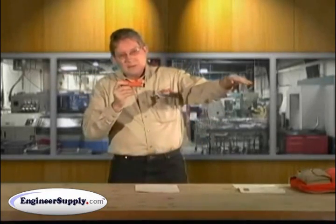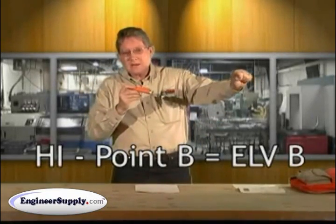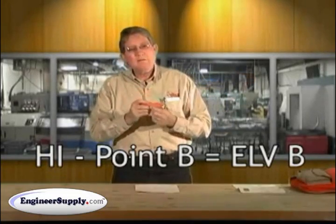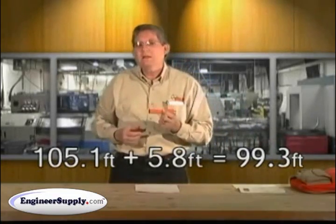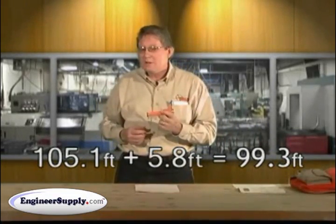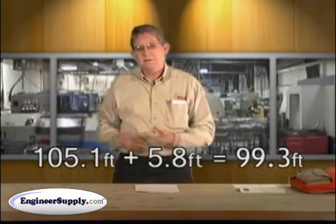Then you measure B, it's 5.8. You subtract 5.8 from 105.1 and that gives you the ground elevation of B. So you can actually run elevations if you choose with a hand level or simple difference in elevations.